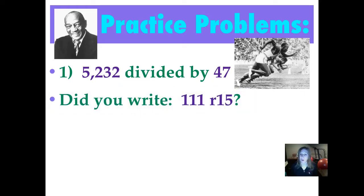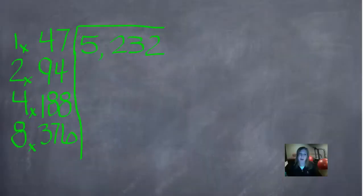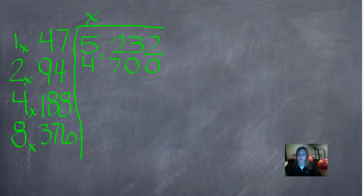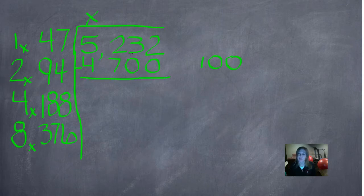Did you write 111 remainder 15? Let's see how we did that. We'll start out by saying what number is closest to 5 without going over — there isn't one, so we'll put an X over that. Now we'll look at 52. The closest number to 52 without going over is 47, because we're looking at the numbers in this column to put in the house. We have two empty place value positions, so we'll annex two zeros. Come over to the number to the left of 47 — it's 1 — and we have to annex two matching zeros over here.